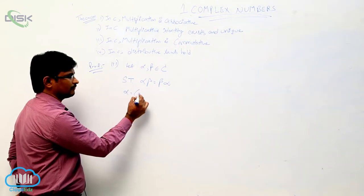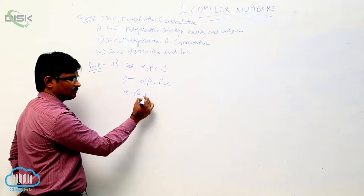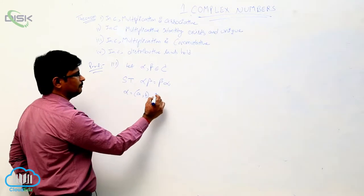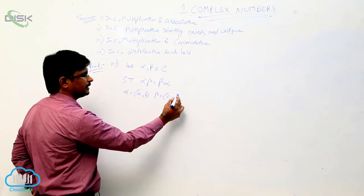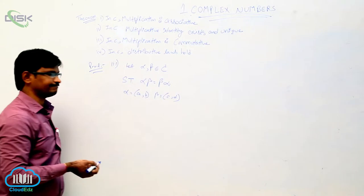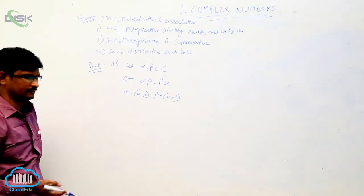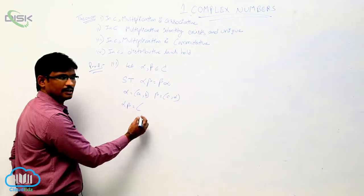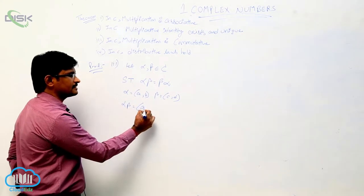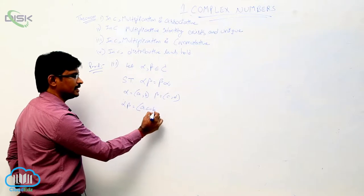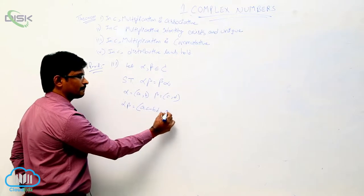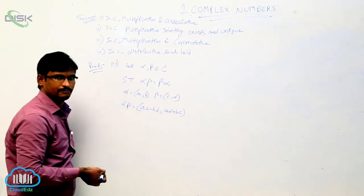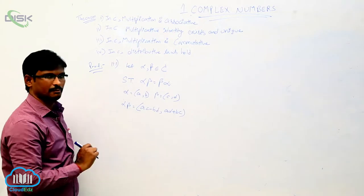We take alpha equal to (a, b) and beta equal to (c, d). We know that alpha into beta is: (ac − bd, ad + bc). This is alpha·beta.